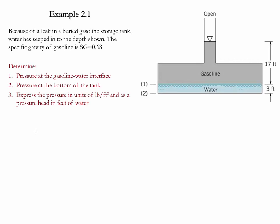Example 2.1. In this example we have a gasoline tank which is buried. However there is a leak of water and the water has seeped into the gas tank. We have the specific gravity of gasoline to be 0.68 and we need to determine the pressure at the interface between the gasoline and the water. We also need to determine the pressure at the bottom of the tank in pounds per square foot as well as pressure head in feet of water.